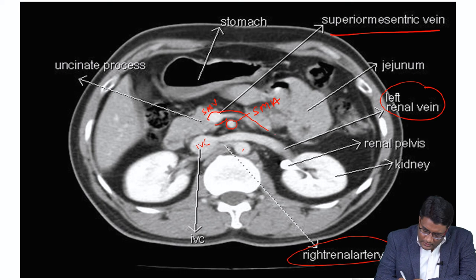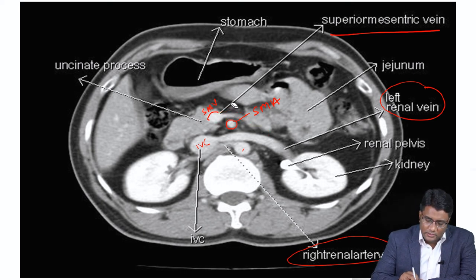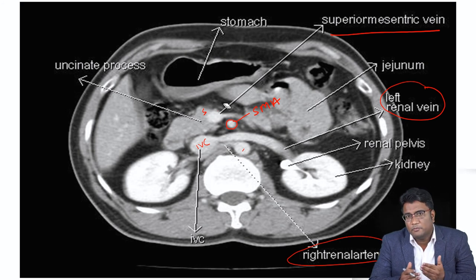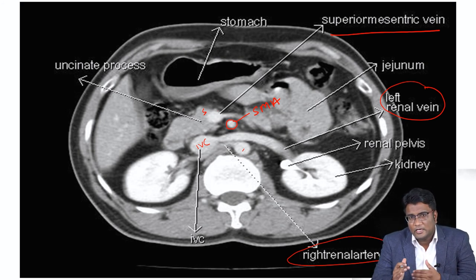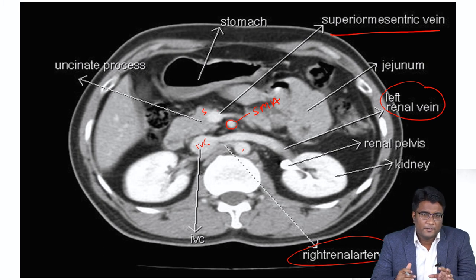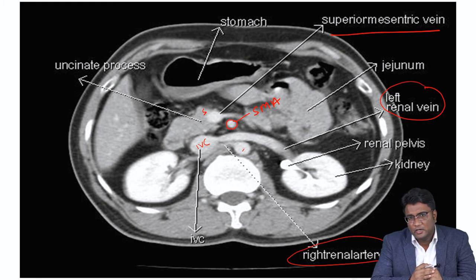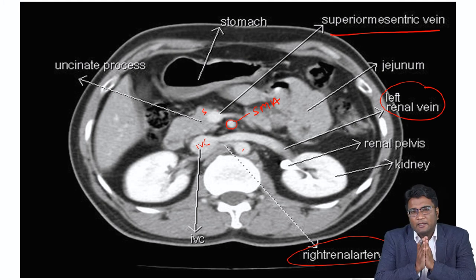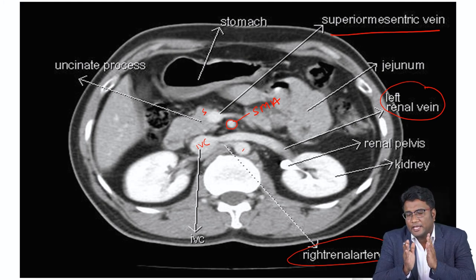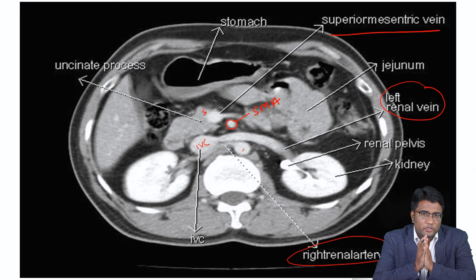The superior mesenteric artery will be joining the splenic vein — you can see this vein here, this is the splenic vein — and both of these at their confluence will form the portal vein. So the splenic vein joins with the superior mesenteric vein to form the portal vein. The splenic artery will pass anterior to the left renal vein, and the orientation of the superior mesenteric artery and superior mesenteric vein should be understood.